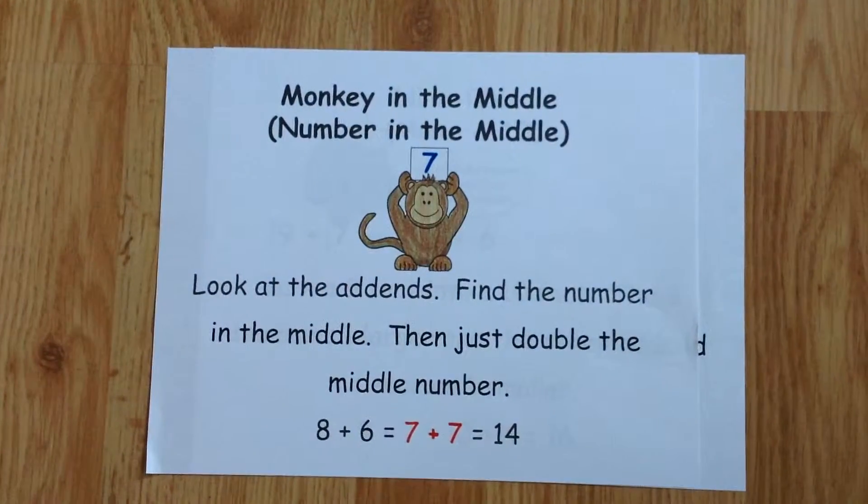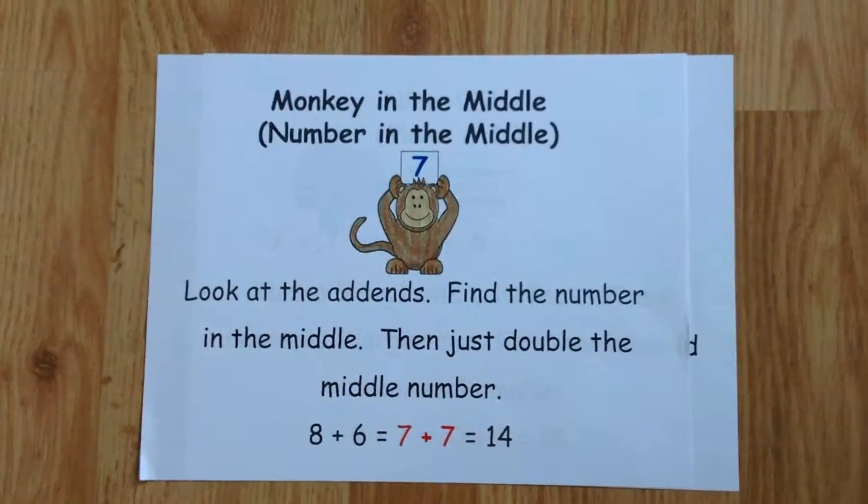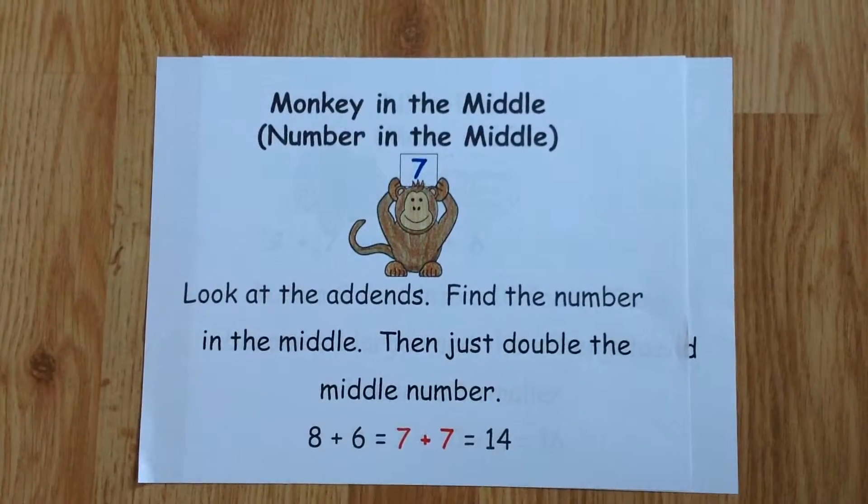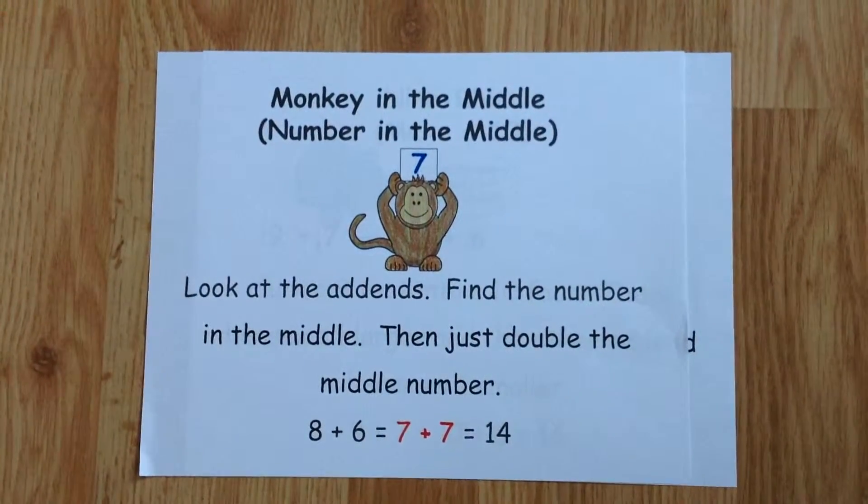The next strategy is called Monkey in the Middle. Look at the two addends. Notice there's a number that's in the middle of them. Double the middle number, and you get an easy answer.